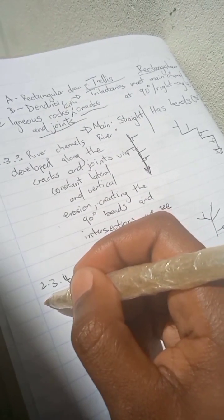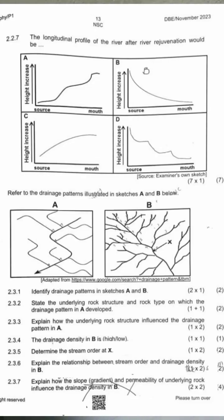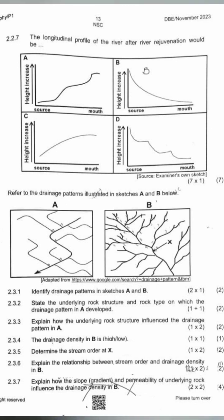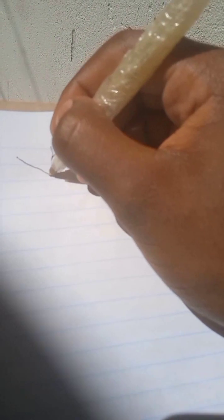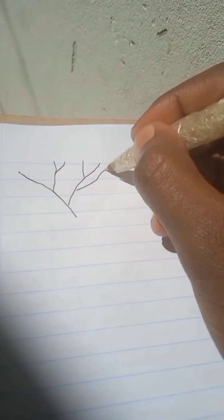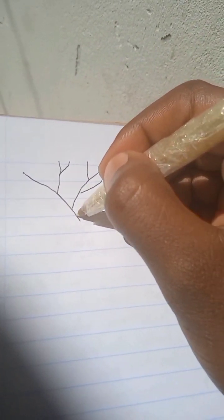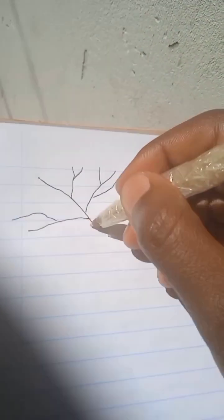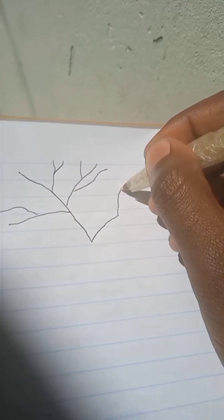For question 2.3.5, we need to determine the stream order at point X. For stream order, it's important that you know the rules and principles and follow them carefully. Take your time because it can be frustrating — they give you a lot of streams so you'll be counting endlessly. You have to have patience and trust the process.